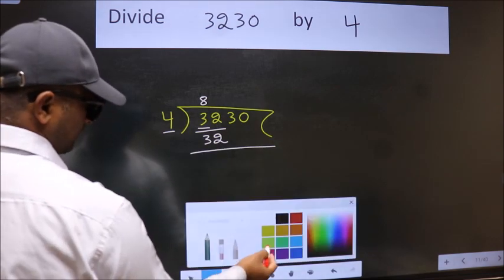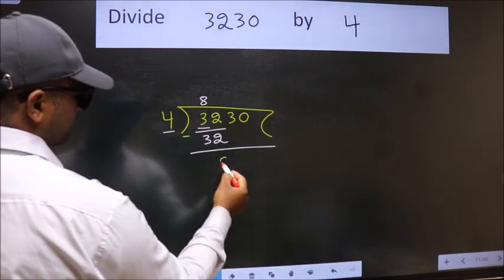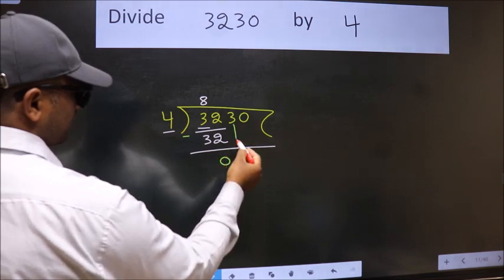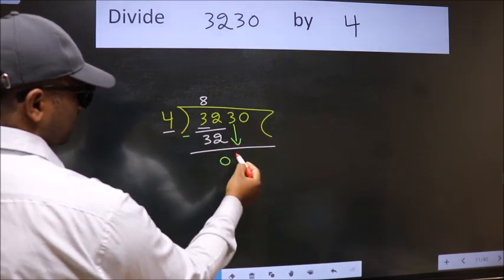Now we should subtract. We get 0. After this, bring down the next number. So, 3 down.